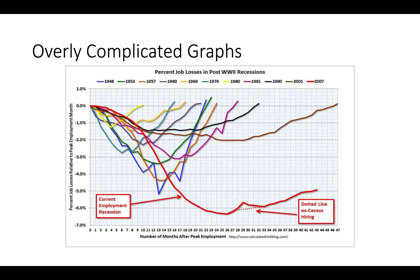The worst graphs are ones that are overly complicated. This graph is really hard to understand. It's looking at recessions — each color represents a different recession that the U.S. underwent and how many people lost their jobs. The left axis shows how many people lost their jobs in each recession over a number of months. There are all kinds of things wrong with this graph. The timescale is strange, and graphs that distinguish only by color are bad because if you're colorblind, they're useless.